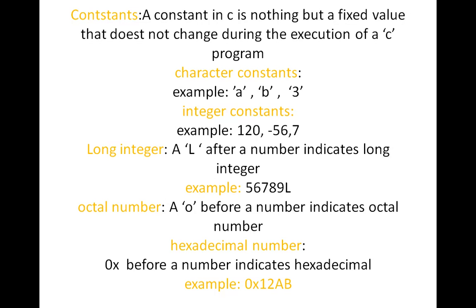Character constants — for example, 'a', 'b', '3' — you have to place them in single quotes. So 'a' and 'b' are character constants, and '3' is also a character constant when placed in single quotes. Even the digit 3 in single quotes is treated as a character constant.